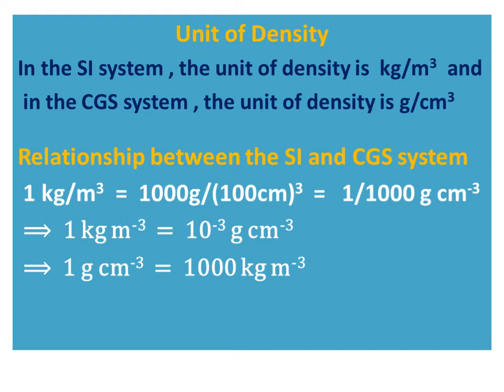Relationship between the SI and the CGS system: 1 kilogram per meter cube is equal to 1000 grams divided by 100 centimeter whole cube, equal to 1 upon 1000 gram per centimeter cube. This implies 1 kilogram per meter cube is equal to 10 to the power minus 3 grams per centimeter cube, and therefore 1 gram per centimeter cube is equal to 1000 kilogram per meter cube.